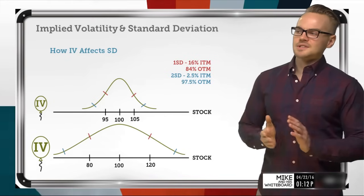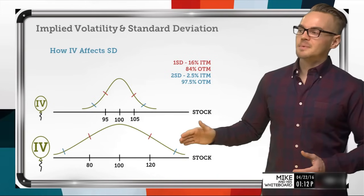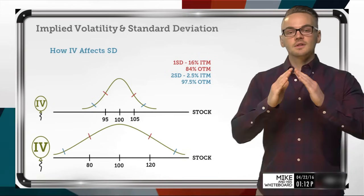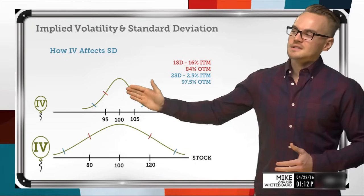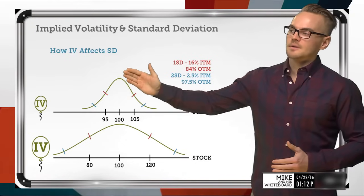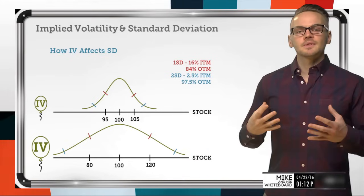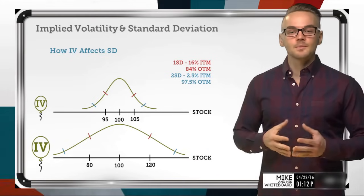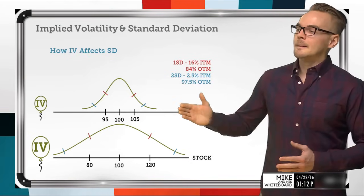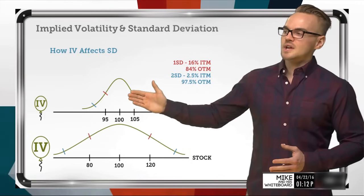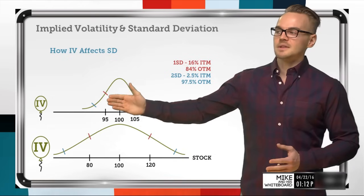How does this change when implied volatility increases? The bell curve itself changes. In the low volatility environment, most of our occurrences are going to happen right around where the stock price is. If we don't think there's going to be a lot of movement in the stock — a low volatility environment — then a lot of the occurrences generated are going to be right around the stock price.